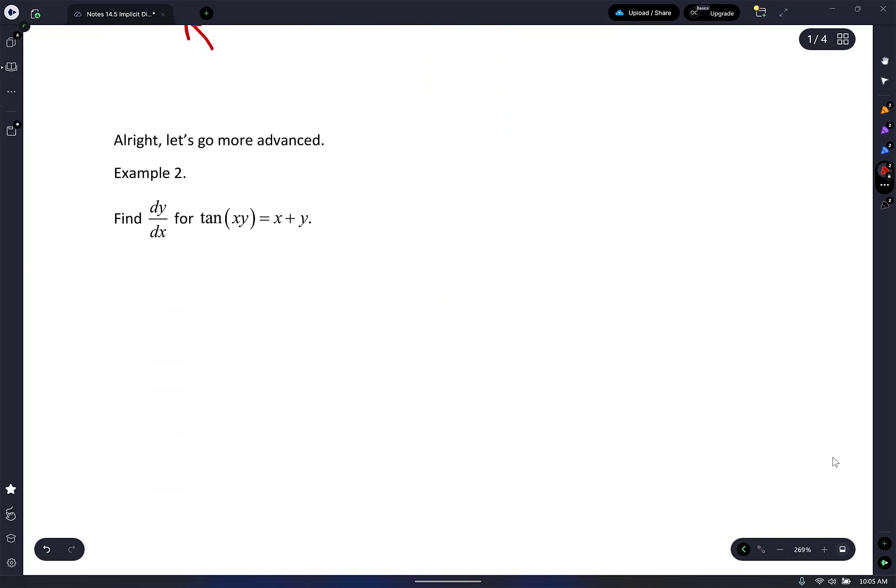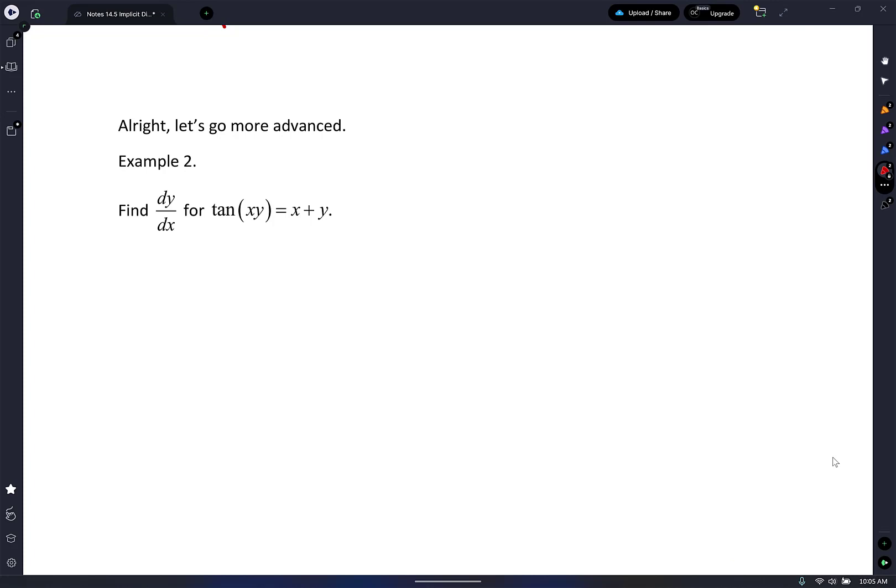So here we go. You guys seem to be having issues with product rule embedded within implicit differentiation. I'm going to take the derivative of tan(xy). I write secant squared and then leave the argument alone, xy. Am I done? No. Chain rule comes in, and I have to take the derivative of the inside. What rule am I going to use? Product.